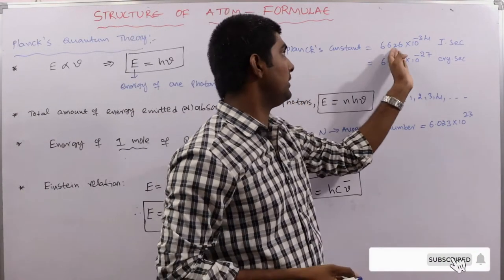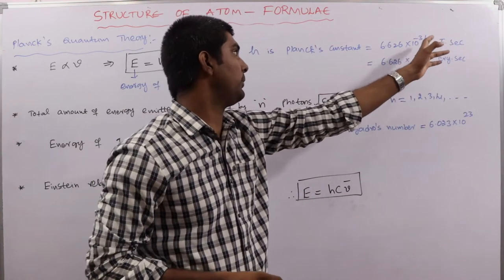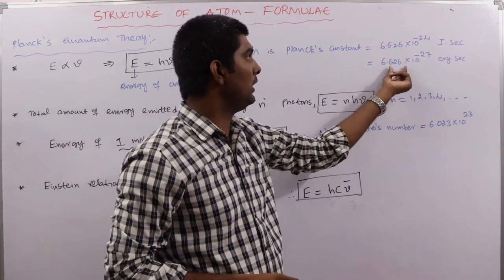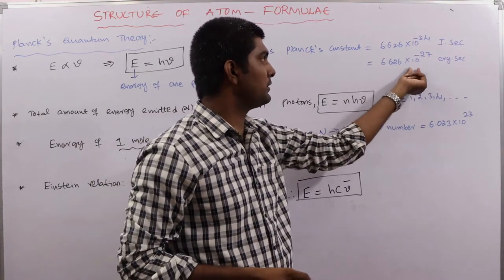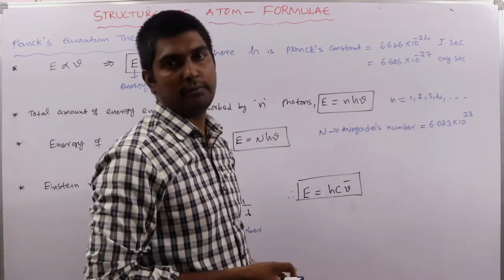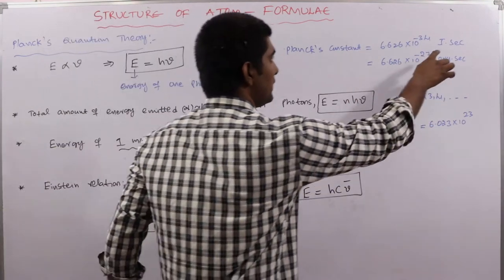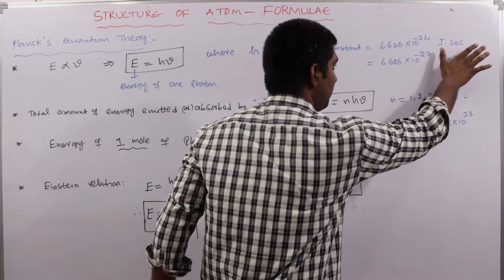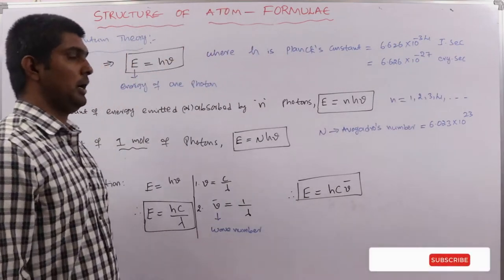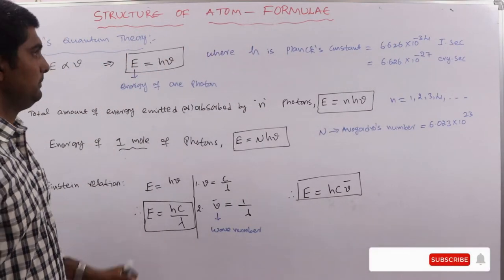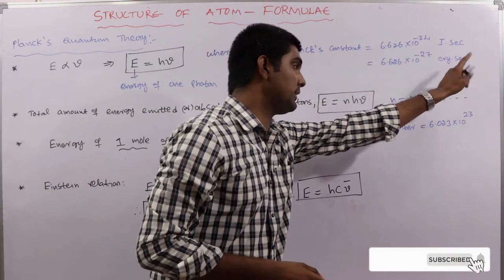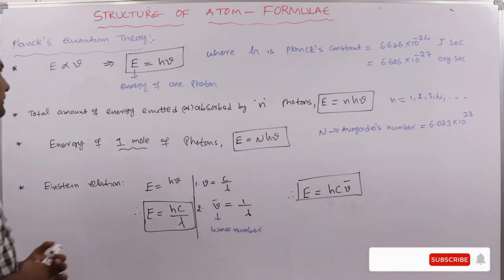Here h is Planck's constant, with value 6.626 × 10⁻³⁴ joule·second, or 6.626 × 10⁻²⁷ erg·second. Note carefully: it is joule·second, not joule per second; and erg·second, not erg per second.